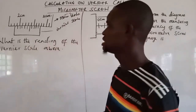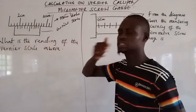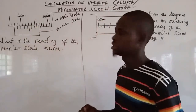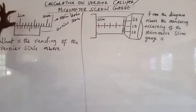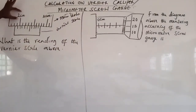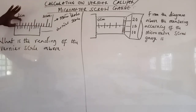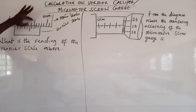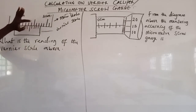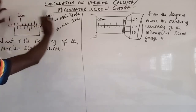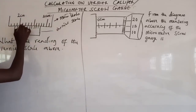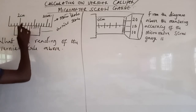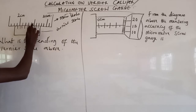The first thing is we need to calculate the reading on the main scale. If you look at this main scale, the distance between 2 cm and 3 cm is divided into 10 divisions — 1, 2, 3, 4, 5, 6, 7, 8, 9, 10. This is a standard ruler, which means each of these divisions represents 0.1 cm. So if this is 2 cm, the next mark is 2.1, then 2.2, 2.3, and so on.